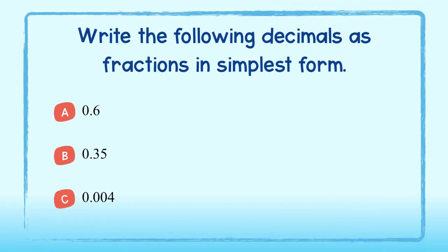Write the following decimals as fractions in simplest form. The first number can be written as six tenths since it ends in the tenths place. This reduces to three-fifths. The second one is thirty-five hundredths and can be reduced to seven-twentieths.